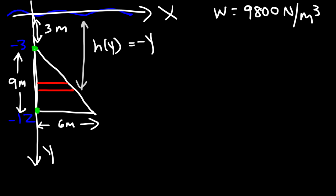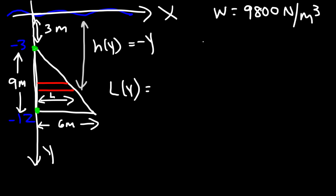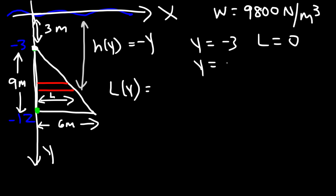Now we need to write a function for l(y). l(y) does not equal 6 because the length of the plate changes based on the depth. When y equals negative 3, l is 0, and when y is negative 12, l is 6. So we need to write a function that relates l to y using those two points.